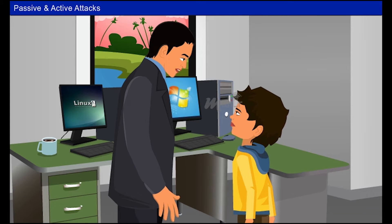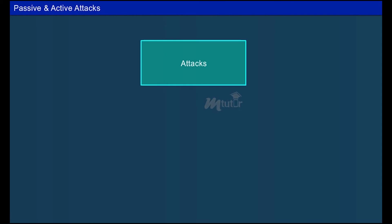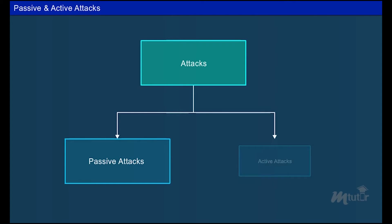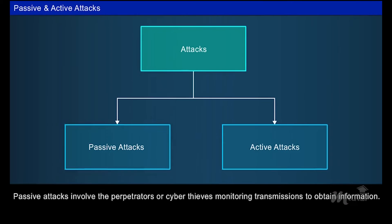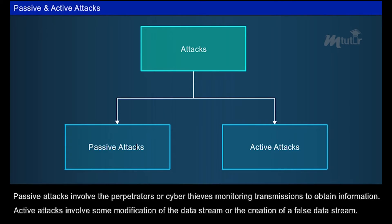Monty marveled at the biometrics technology. Sendal then moved on to hacking types, or attacks. There are two types of attacks: passive attacks and active attacks. In passive attacks, cyber thieves monitor transmissions to obtain information. In active attacks, they involve some modification of the data stream or the creation of a false data stream.